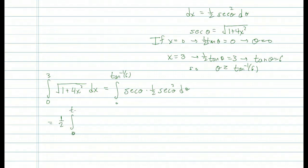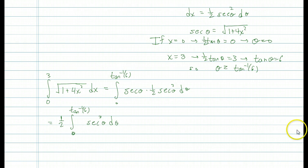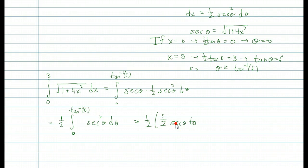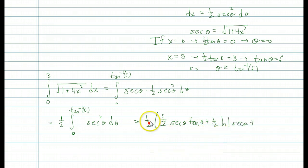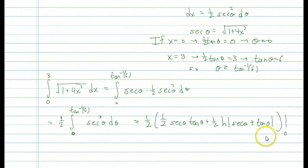We've done this in class already — we saw we could not avoid integration by parts, but we're not going to go through all that. We have a formula you can look up in the textbook. The antiderivative of secant cubed is one-half times secant theta tangent theta plus one-half times the natural log of the absolute value of secant theta plus tangent theta. So with the one-half on the outside, we evaluate that from 0 to the inverse tangent of 6.